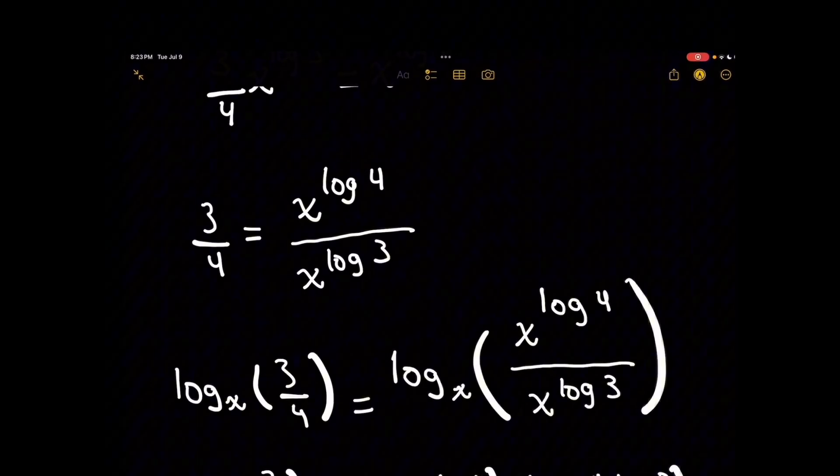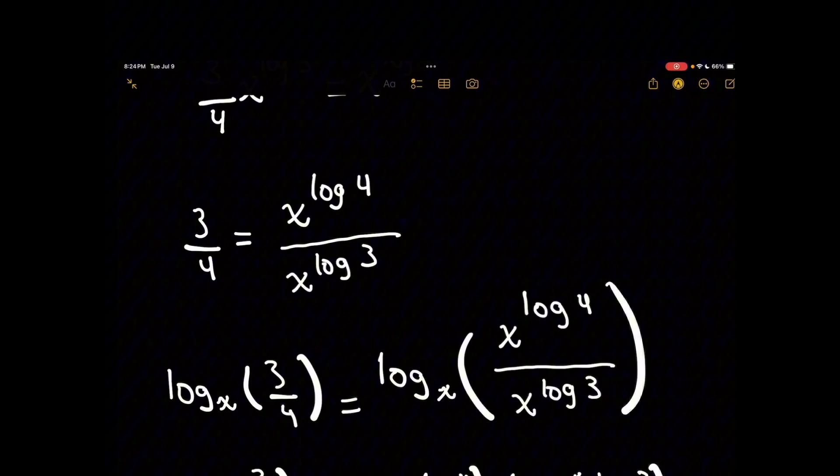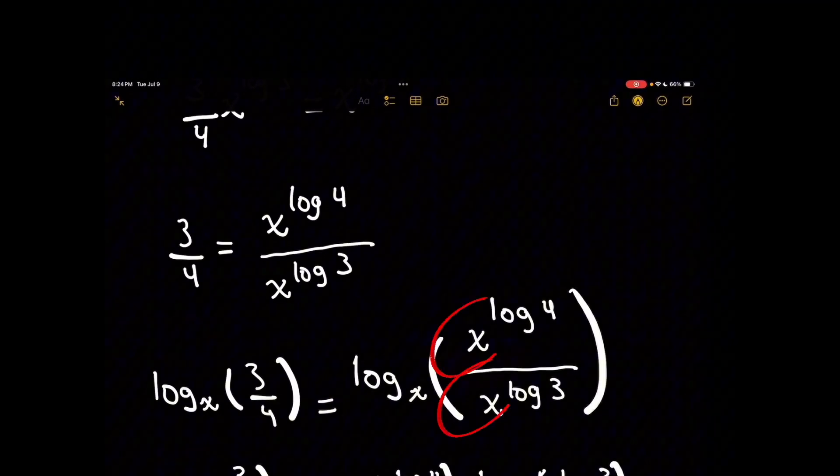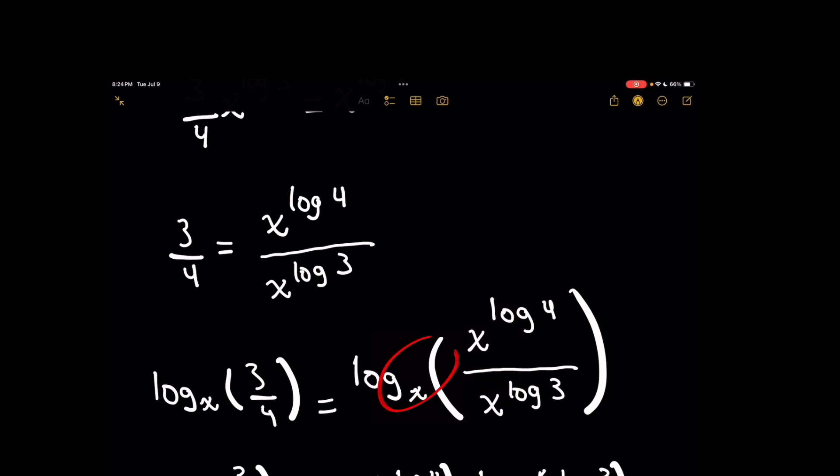And what I want you to remember is that normally with logs, we tend to think that the base is a number 10, for instance, the default base for a regular log. Or it might be E for natural log, which is the same as log base of E. But here, we don't have a known base. We just have x raised to some power. So, why don't we just choose x as our log to make things easier?